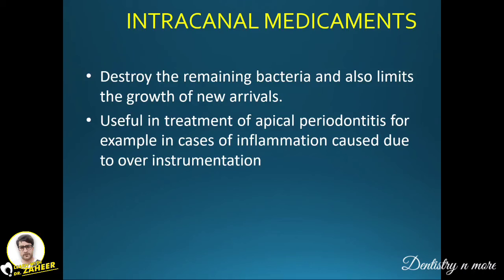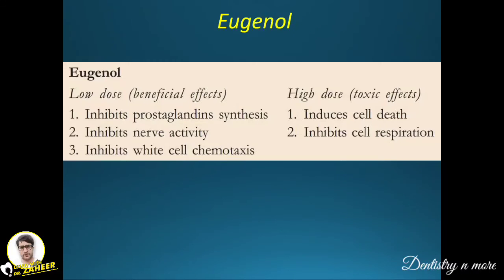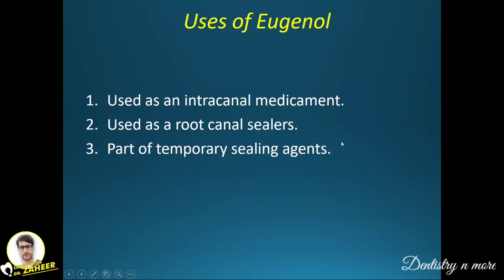Intracanal medicaments destroy remaining bacteria and limit growth of new bacteria. They are useful in treatment of apical periodontitis and inflammation caused by over-instrumentation. Eugenol is a commonly used intracanal medicament. At low doses it inhibits prostaglandin synthesis and nerve activity and inhibits white cell chemotaxis, whereas at high doses it directly induces cell death and inhibits cell respiration. It is used as an intracanal medicament, as a root canal sealer, and as a temporary sealing agent.